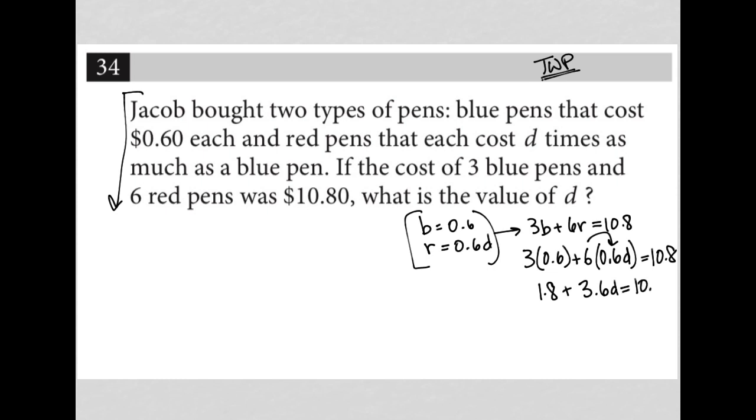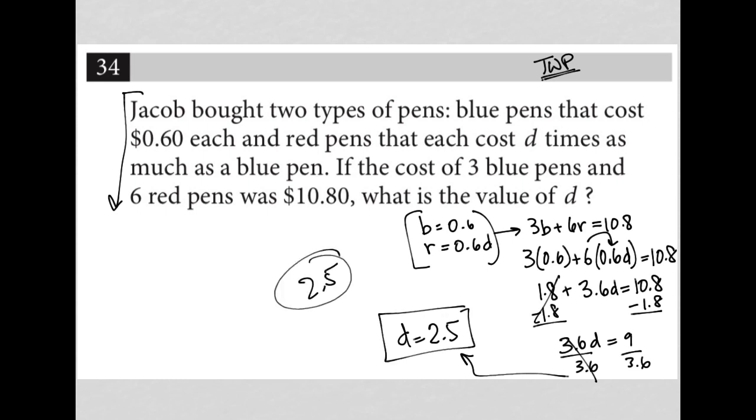That equals 10.8. I subtract 1.8 from both sides, and I'm left with 3.6D equals 9. Divide both sides by 3.6, and D equals, go to my calculator, 9 divided by 3.6 is 2.5. So my correct answer here is 2.5.